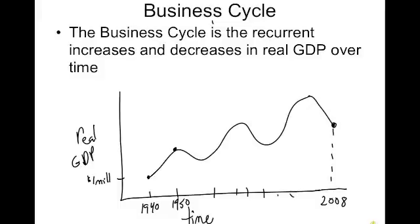On the graph, the curve shows that between 1940 and 1950 there is an increasing real GDP. After 1950, it starts to decline, then increase again, then decline, then increase and decline. This up and down pattern is called the business cycle.